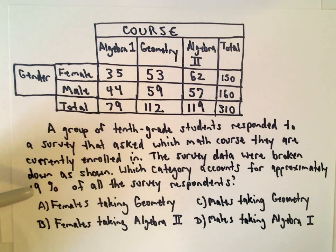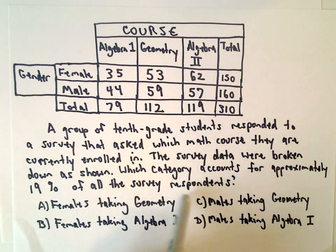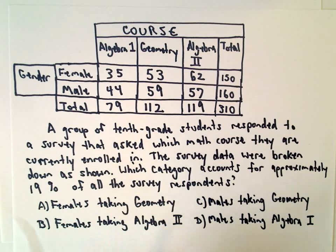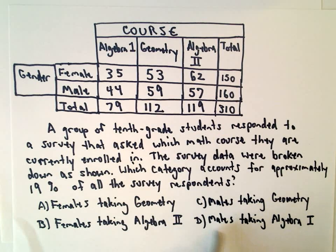It says: which category accounts for approximately 19% of all the survey respondents? We have A, females taking geometry; B, females taking algebra 2; C, males taking geometry; and D, males taking algebra 1.